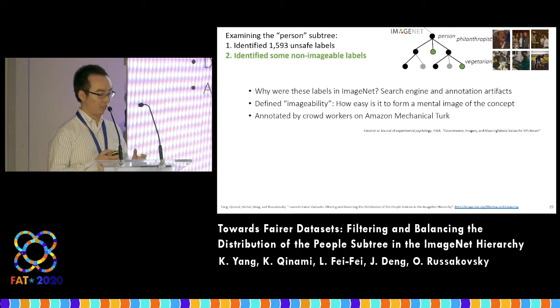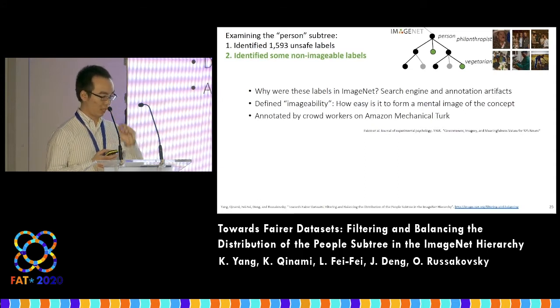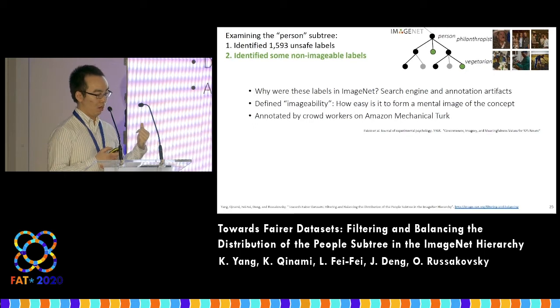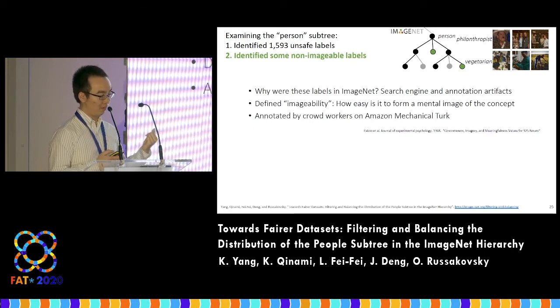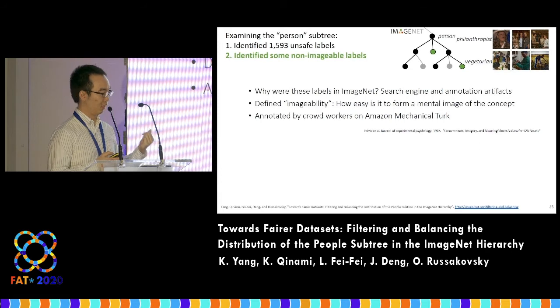Rather than verifying images, we ask crowd workers on Amazon Mechanical Turk to annotate the imageability score of a concept on a scale of one to five in terms of how imageable it is.